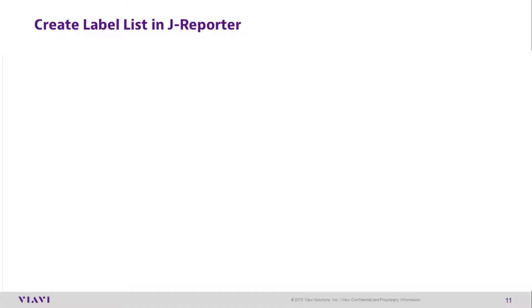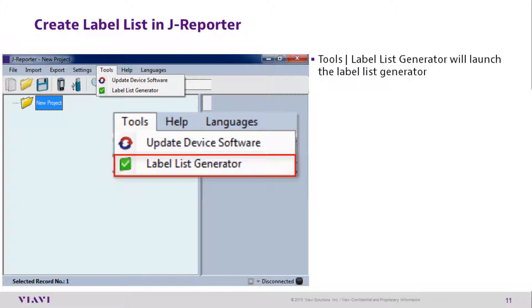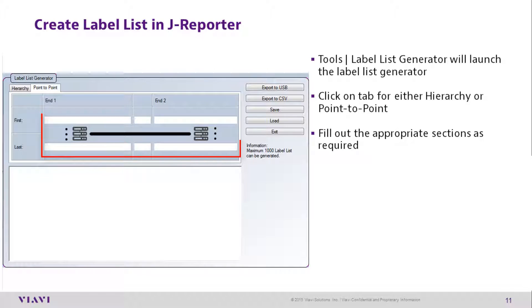To create a label list in JReporter, with JReporter open go to the Tools tab and select Label List Generator. Click on the tab for either Hierarchy or Point-to-Point, and fill out the appropriate sections as required.